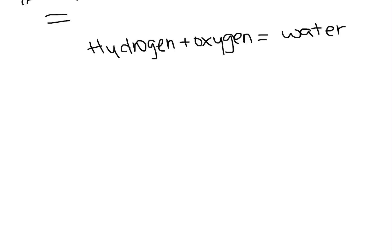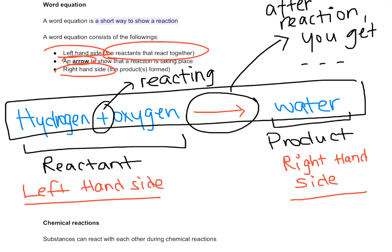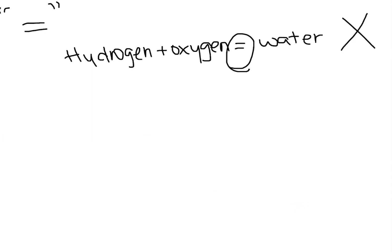That would be wrong. So if you're trying to write a word equation and you're writing it with an equal to sign, that's wrong because this is a mathematical expression, which is incorrect. Here we're not writing a mathematical expression; we're showing that a chemical reaction is taking place. If you're typing, you will have to use two dash signs and the arrow sign — so that would be my arrow if I am typing.